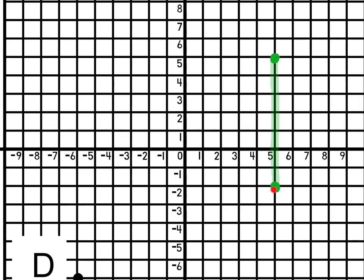So here you can see my point at 5, negative 2, and at 5, 5, and it makes a straight vertical line. So now my distance between the points would just be counting. 1, 2, 3, 4, 5, 6, 7. This is 7 units apart.